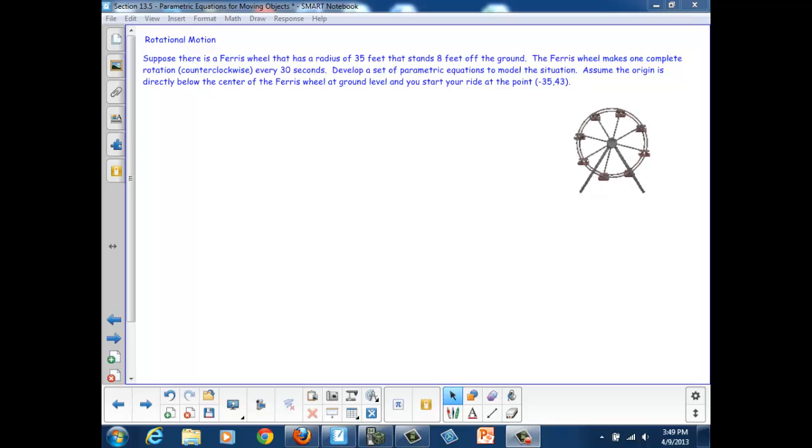Assume the origin is directly below the center of the Ferris wheel at ground level, and you start your ride at the point. Okay, so how do we attack this problem?